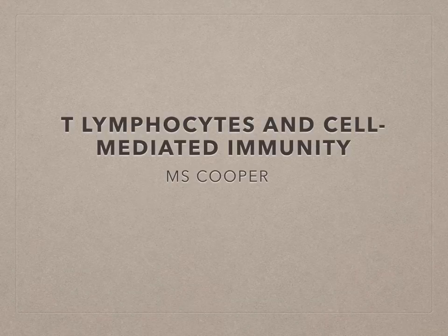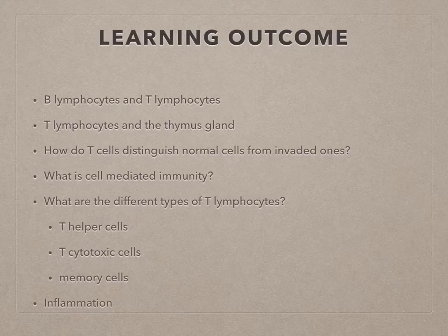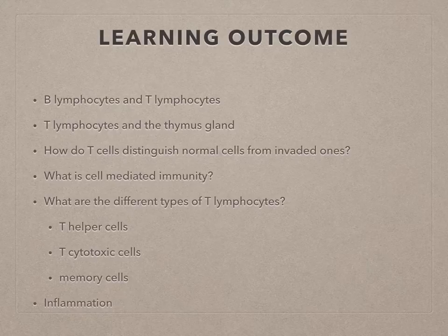In this topic, we're going to look at T lymphocytes and cell-mediated immunity. We're going to discuss T lymphocytes and just touch on B lymphocytes — T lymphocytes in the thymus gland, how T cells distinguish normal cells from invaded ones, what is cell-mediated immunity, and the different types of T lymphocytes: T helper cells, T cytotoxic cells, and memory cells. We'll then end off with inflammation.